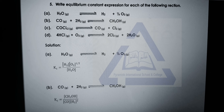Question five — write the equilibrium constant expression for each of the following reactions. Part one: water in a reversible reaction giving hydrogen and half a mole of oxygen. In the reactant side there is one mole of water; in the product side there is one mole of hydrogen and half a mole of oxygen. Write water in the denominator raised to power 1, and hydrogen and oxygen raised to their respective mole powers in the numerator — for example, write ½ for oxygen inside its square bracket. Try to solve parts b, c, and d yourself.